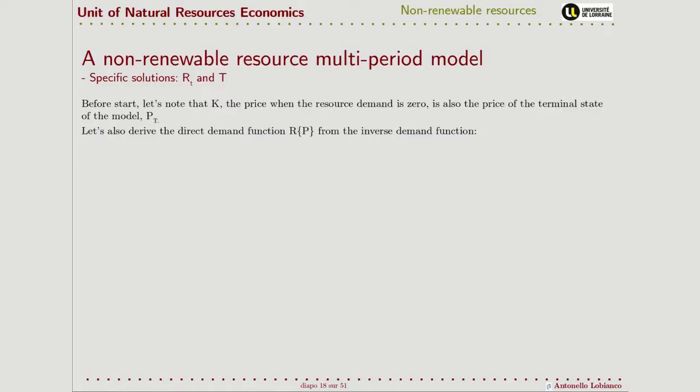Before we start, let's note that K, the parameter of our specific demand function, is also the price at the terminal state of the model. This is because at the terminal state, resource extraction must be equal to zero, and K is exactly the price when the resource demand is equal to zero.